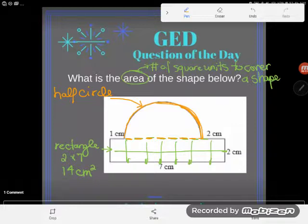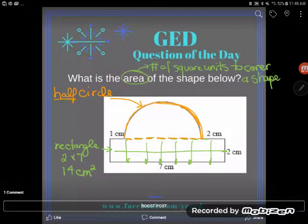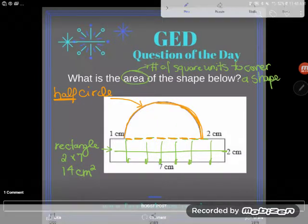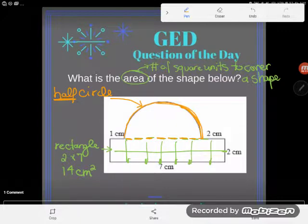So we might not have a half circle, but at least we have a circle formula. Now you're thinking, well Kate, how am I going to turn a circle formula into a half circle formula? And the answer is in the word. You're going to half the circle formula.